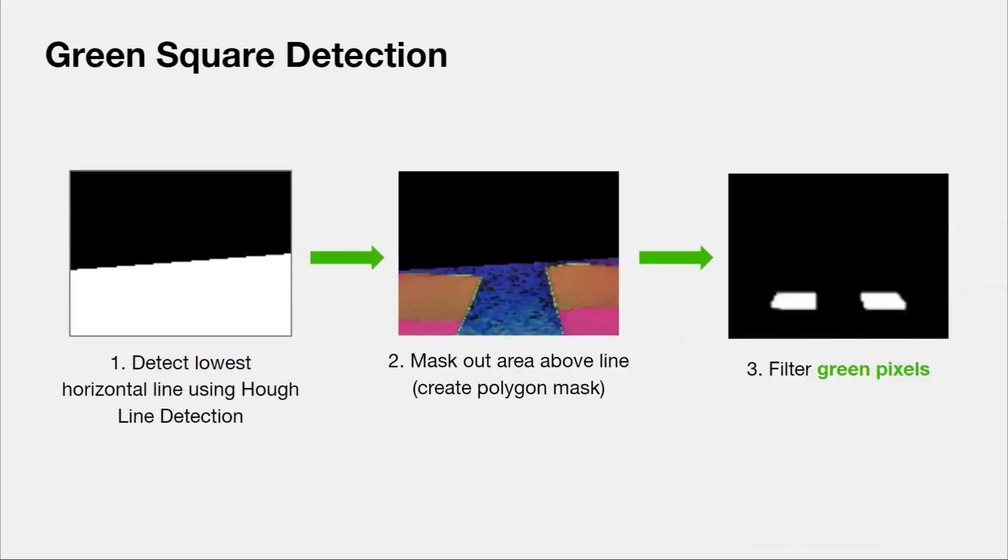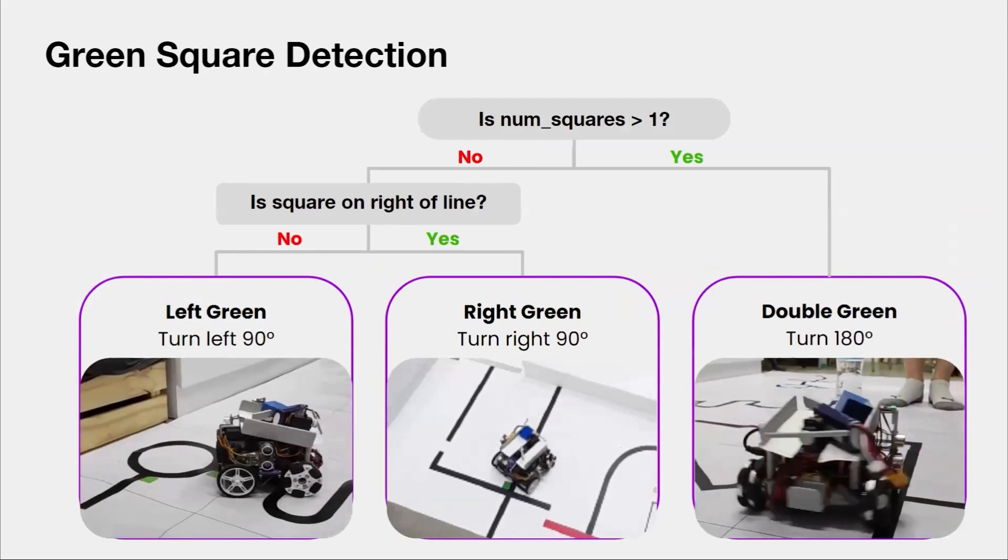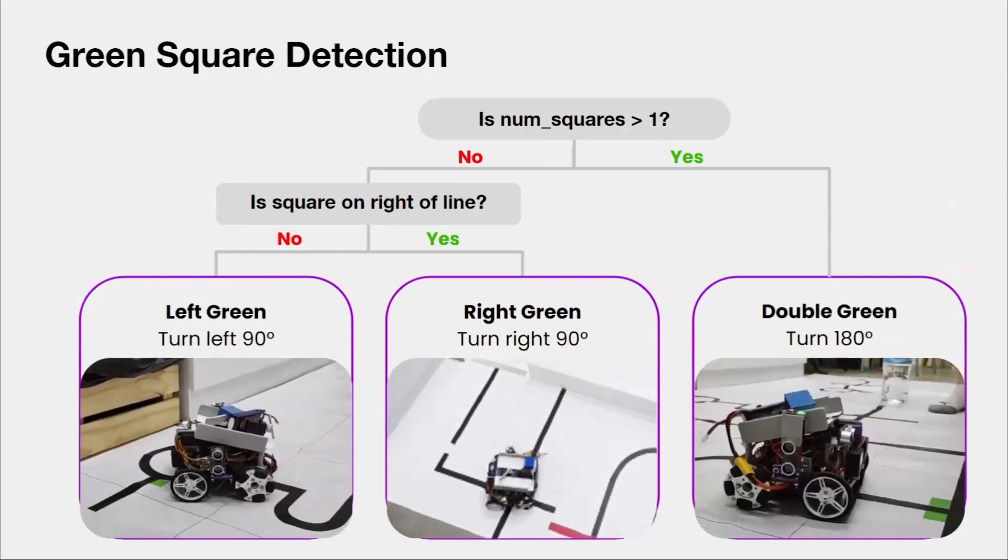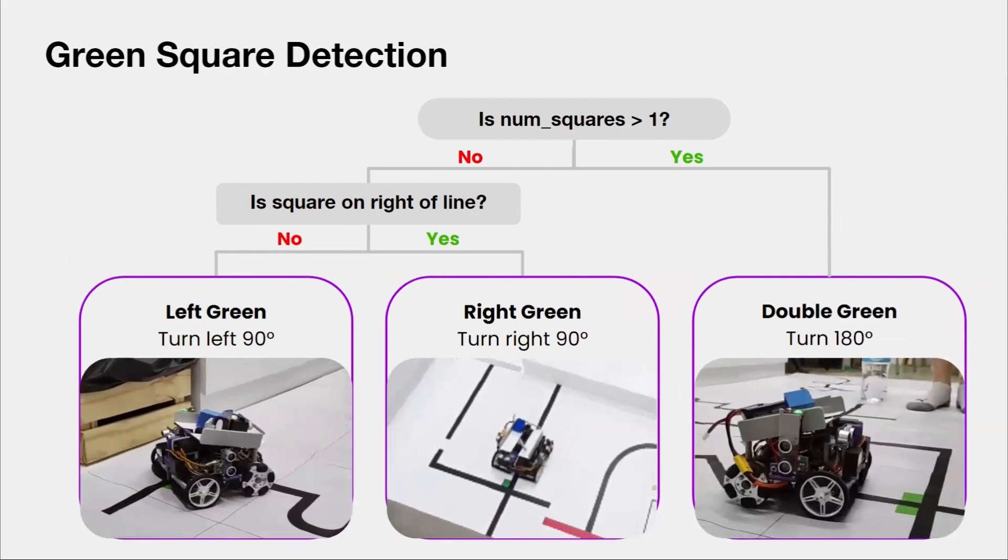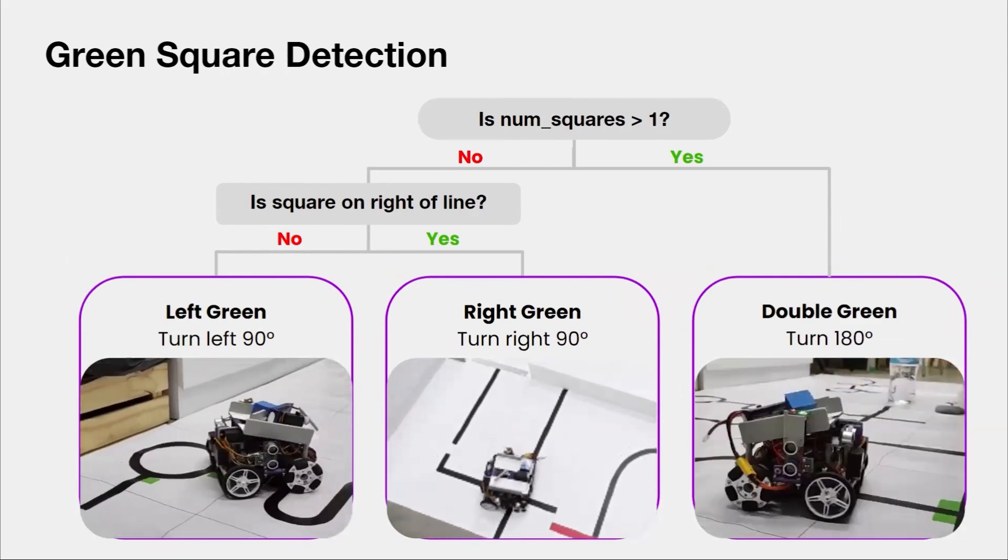For green square detection, we use Hough lines function in OpenCV to detect the horizontal line of the intersection. Then we crop the frame to obtain a polygon mask of the region below the line, so the robot does not detect any green squares after the intersection and avoids following the wrong instructions. Then we filter for green pixels to identify the number of green squares. We found that Hough line detection works for both horizontal and circular intersections, even though Hough line theoretically only works on straight lines. If only one green square is identified, the robot determines which side of the line the green square is on by comparing the x values of the green centroid with the line centroid and executes the turn accordingly.